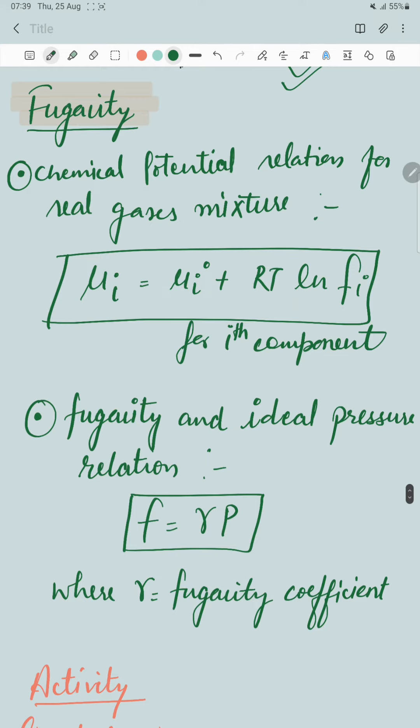So for fugacity, we will show the chemical potential relationship. This is the chemical potential relationship including fugacity for the ith component. Fugacity and ideal pressure relation is: fugacity equals psi P, where psi is the fugacity coefficient.